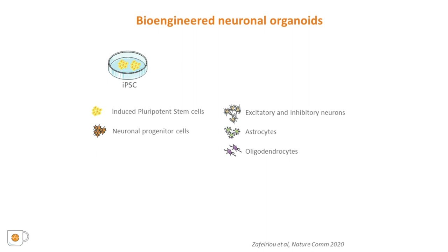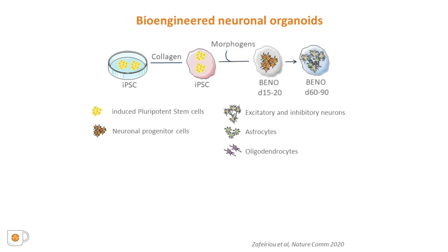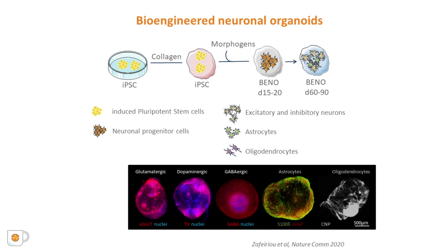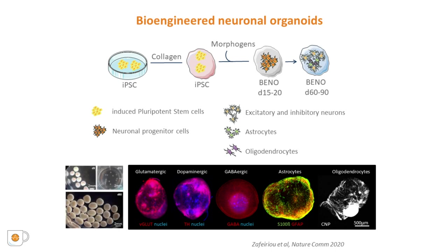PINOs are generated by embedding human-induced pluripotent stem cells in a collagen hydrogel and treating them with specific morphogens. Since excitatory and inhibitory neurons are essential for network formation, we aimed to enhance the development of both populations early on. Besides neurons, PINOs contain myelinating and non-myelinating glia, which contribute to neuronal function, and microscopically they are fairly homogeneous.